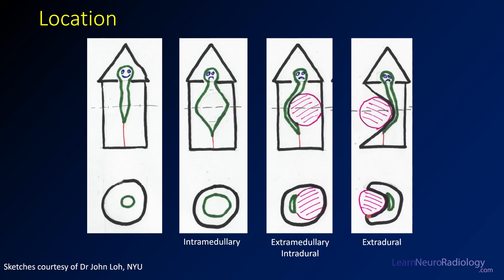Finally, if you have a lesion that is extradural — coming from outside — you'll often be able to see displacement of the dura and the cord itself. On a coronal image, for instance, it will look like the dura is displaced to the side, causing displacement of the spinal cord. You can use the location of those spaces to help inform your differential.